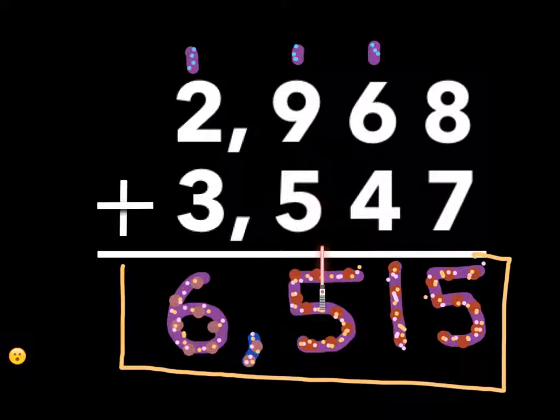Nine plus five is fourteen, plus the one is fifteen. So five is here, and the one goes there. Two plus three is five, plus one is six.